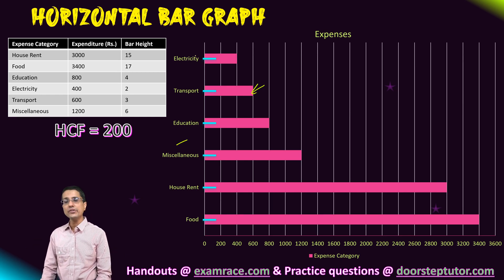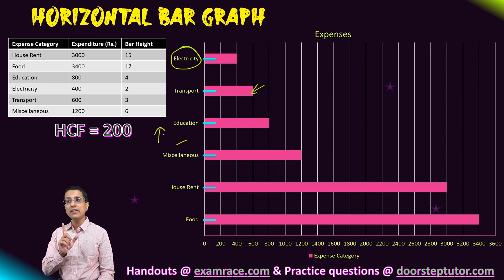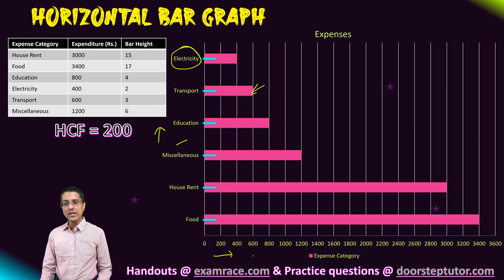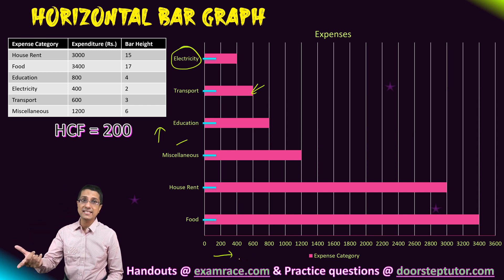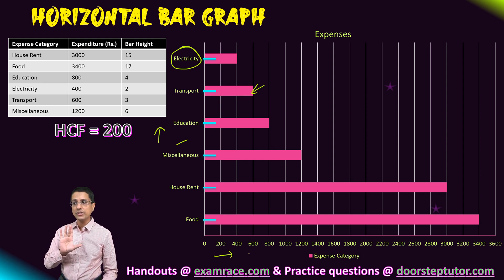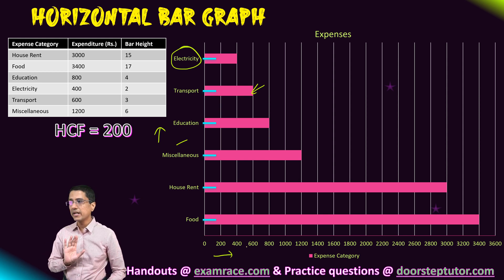In the case of a horizontal bar graph, our categories appear on the vertical or the y-axis, and our values — the corresponding values — appear on the horizontal or the x-axis. So that is the only thing which changes between the two graphs, the only thing which you need to take care of.